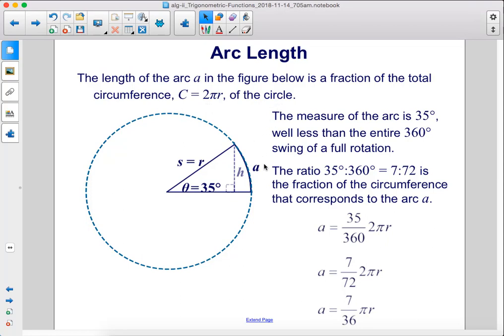The measure of the arc is 35 degrees, well less than the entire 360-degree swing of a full rotation. The ratio 35 degrees to 360 degrees equals 7 to 72 is the fraction of the circumference that corresponds to the arc a.